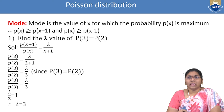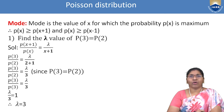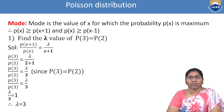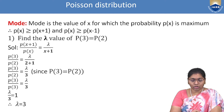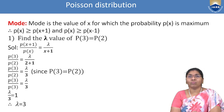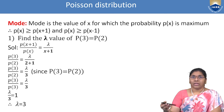Mode: Mode is the value of x for which the probability P(x) is maximum. Therefore P(x) ≥ P(x+1) and P(x) ≥ P(x−1).